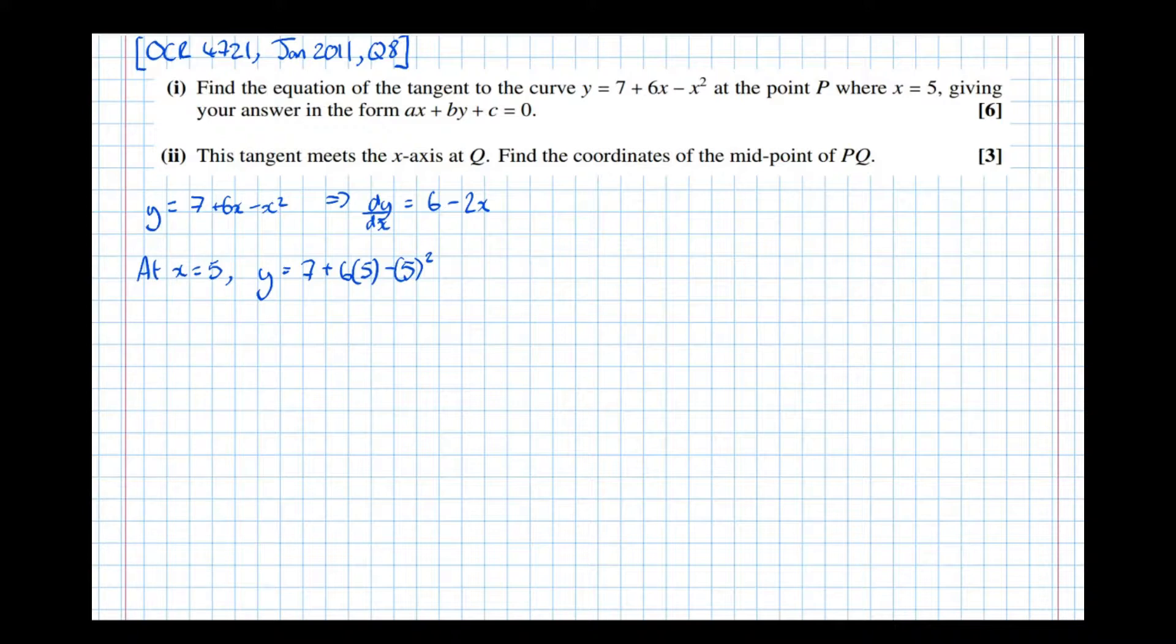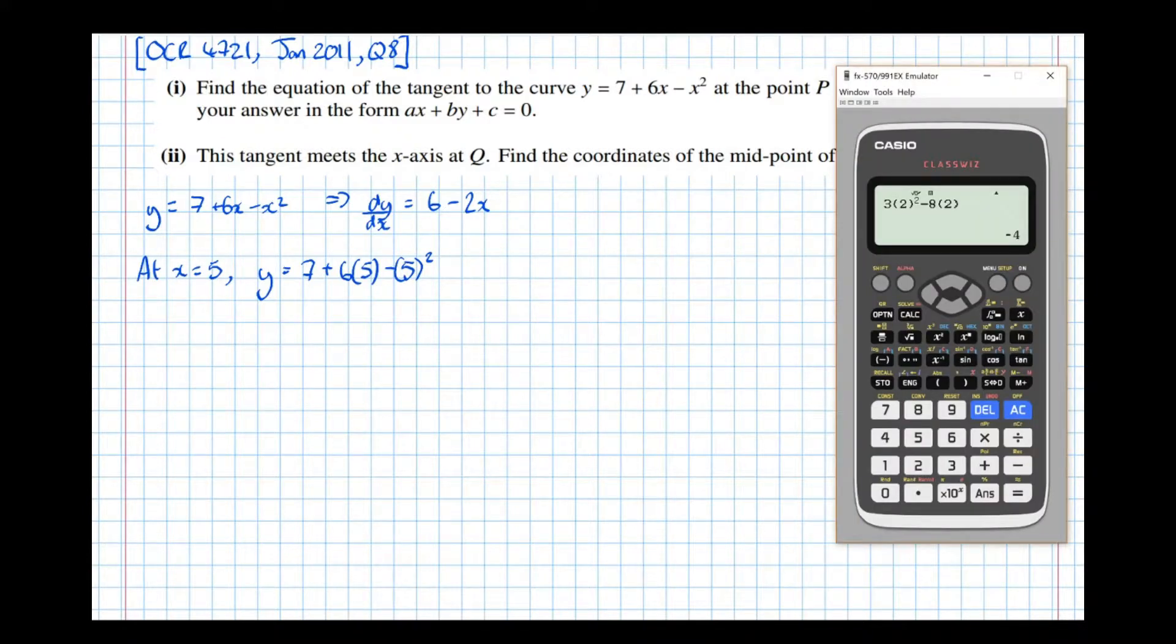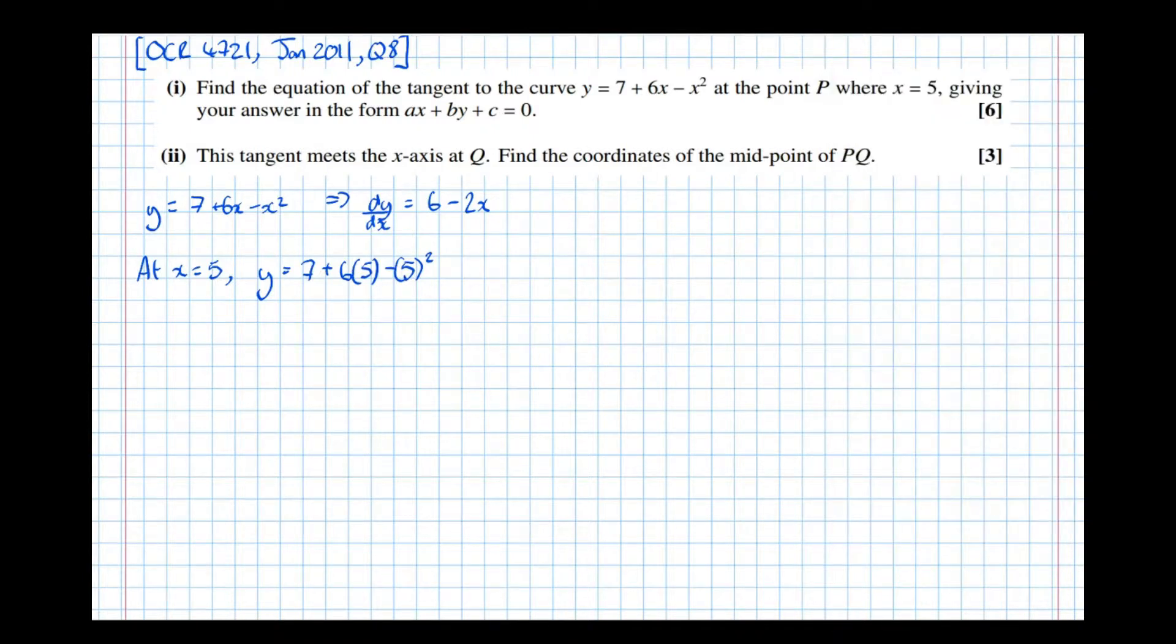And this should be easy enough to do without a calculator, but taking no chances. Let's make sure our arithmetic's correct. 7 plus 6 lots of 5, take 5 squared, equals 12. Therefore, the point is (5, 12).